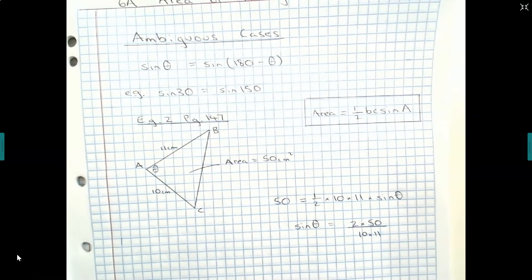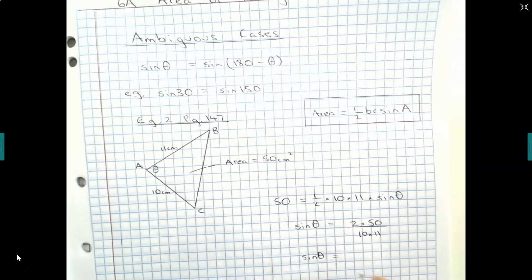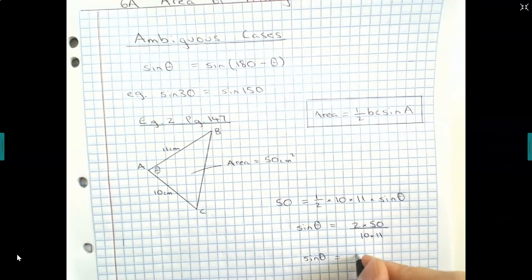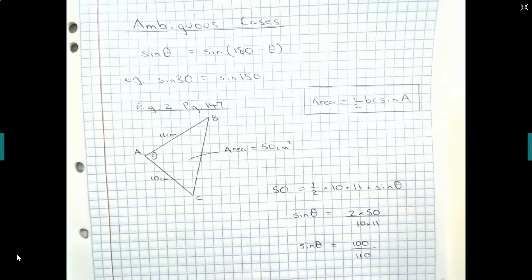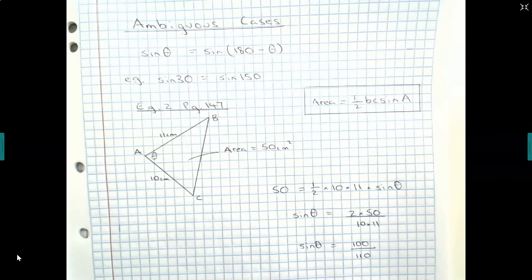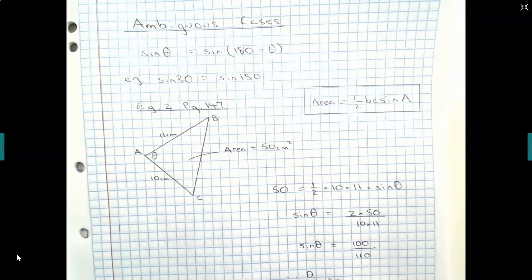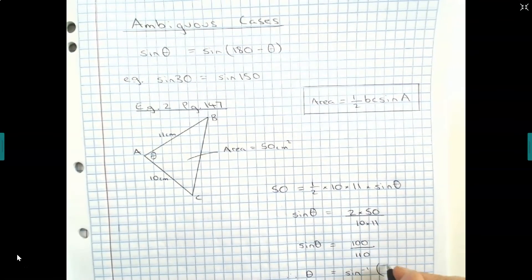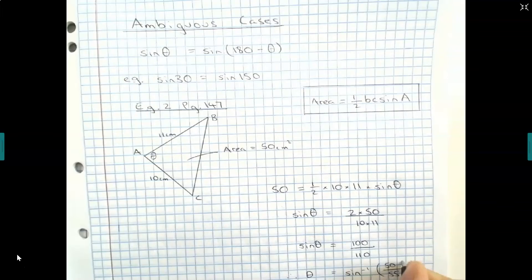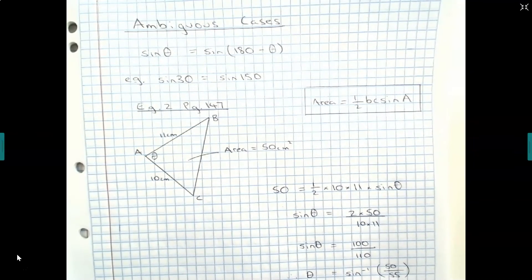Which is equal to 100 over 110, which is 50 over 55. Therefore, theta is equal to the inverse sine of 50 over 55, which is equal to 65.4 degrees.